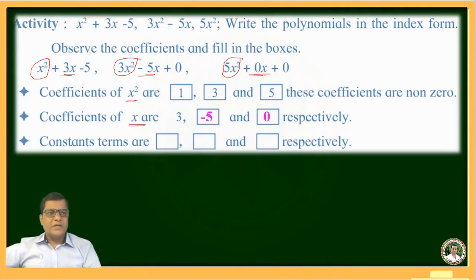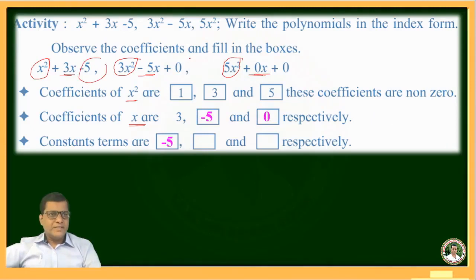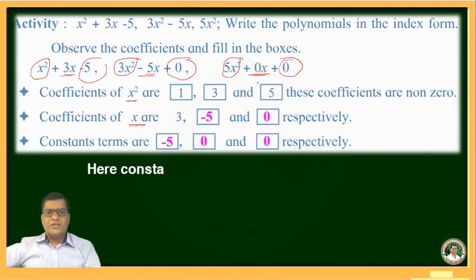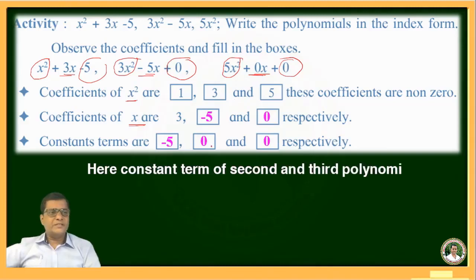The constant terms are: in the first polynomial, the constant term is −5; in the second polynomial, the constant term is 0; and in the third polynomial, the constant term is also 0. So the constant terms of the second and third polynomials are 0.